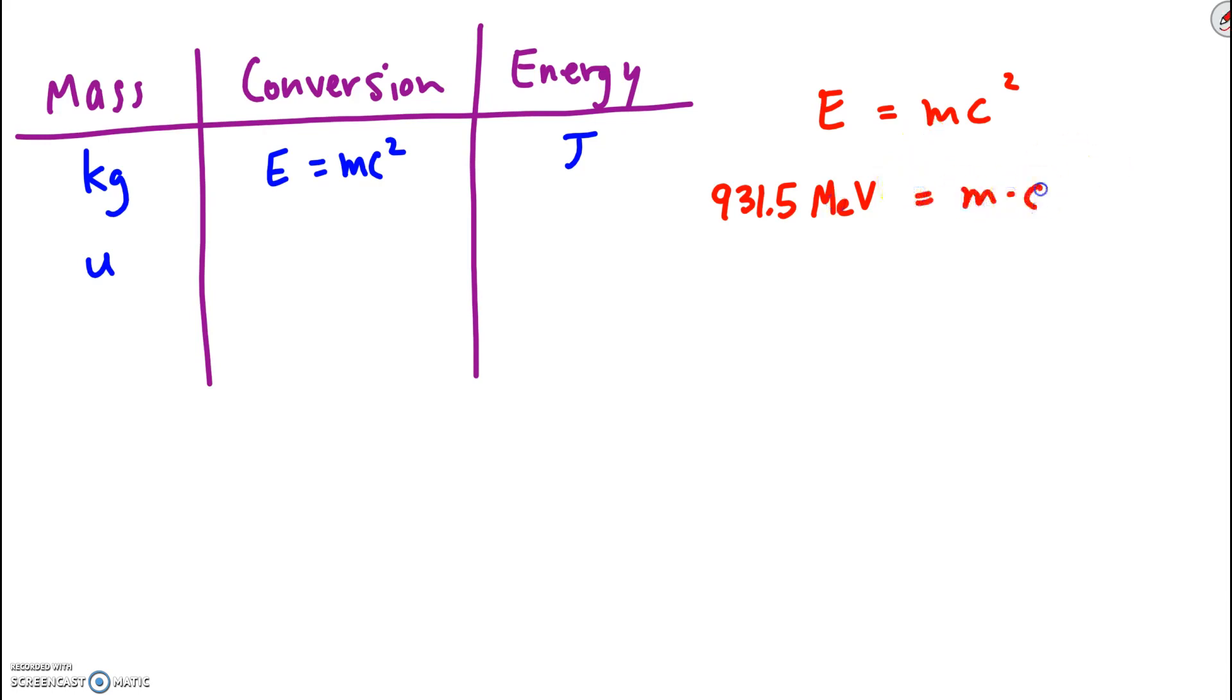m is the unknown. Notice I'm not plugging in 3 times 10 to the 8. Well, let's divide by c squared. And first of all, apparently this is a unit of energy. I mean, I'm not plugging in 3 times 10 to the 8. I'm leaving it as a variable, but I'm kind of incorporating it into the unit of mass. It's a unit of mass, not energy.